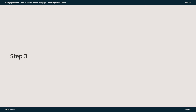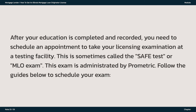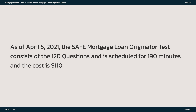Step 3: Pass a Licensing Exam. After your education is completed and recorded, you need to schedule an appointment to take your licensing examination at a testing facility. This is sometimes called the SAFE Test or MLO exam. This exam is administered by Prometric. Follow the guides below to schedule your exam. As of April 5, 2021, the SAFE Mortgage Loan Originator Test consists of 120 questions, is scheduled for 190 minutes, and the cost is $110.